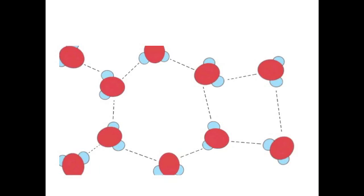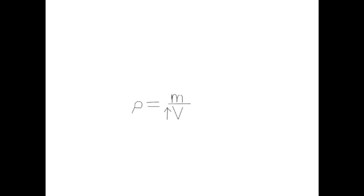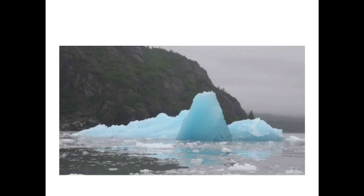And this expansion of the water molecules is what causes an increase in the volume of ice compared to liquid water, and that increase in volume is what causes a decrease in density of ice. And that is why ice floats on top of liquid water.